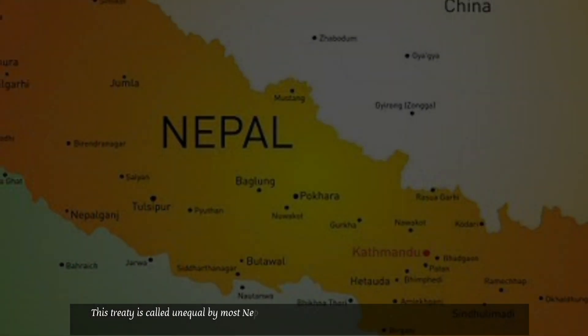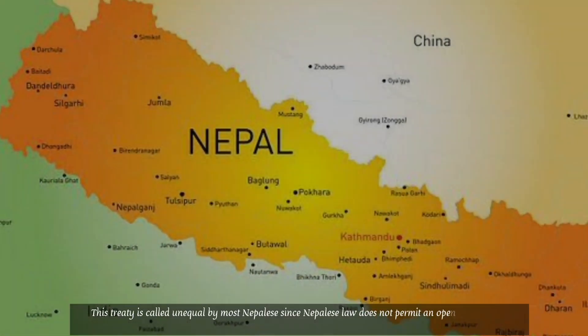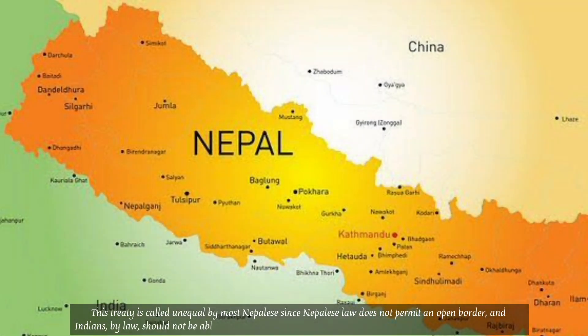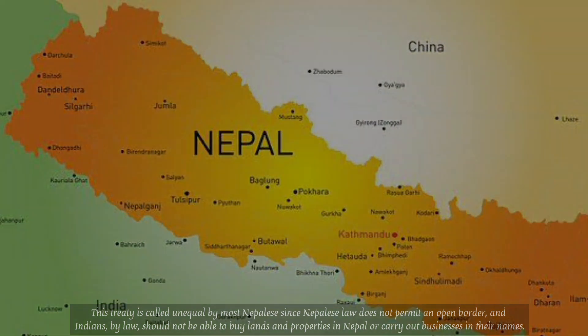This treaty is called unequal by most Nepalese, since Nepalese law does not permit an open border, and Indians, by law, should not be able to buy lands and properties in Nepal or carry out businesses in their names.